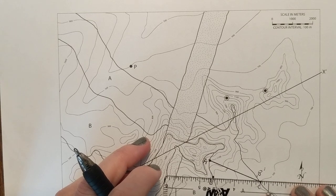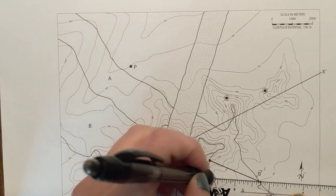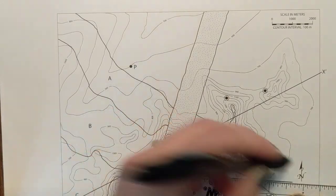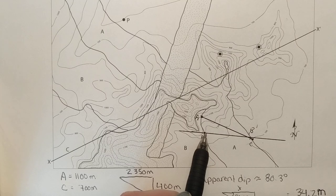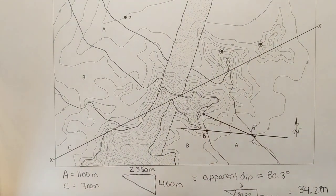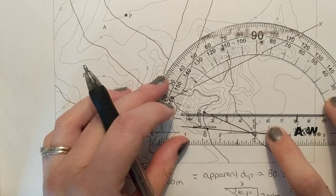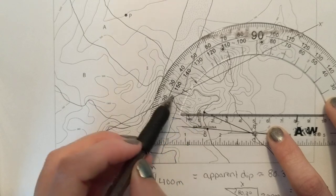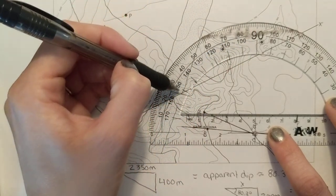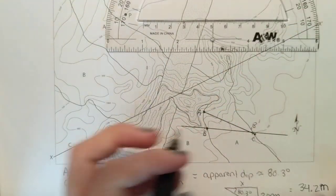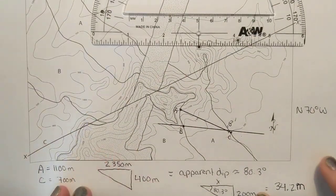We draw the line from B to B-prime — this is our strike line, a line of equal elevation through our unit A. Measuring the strike angle from north, it's approximately North 70 degrees West. You can also express this in azimuth terms.